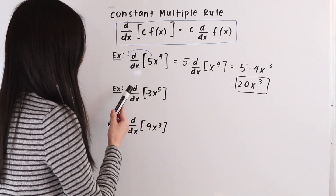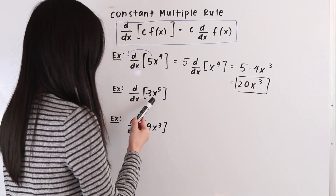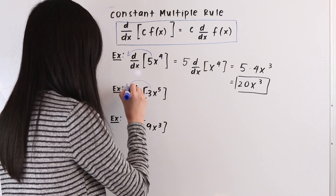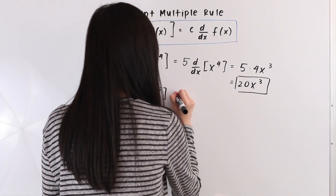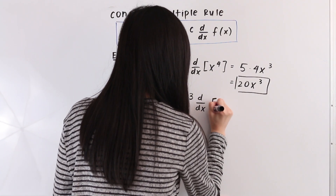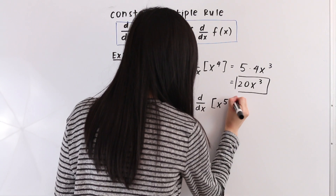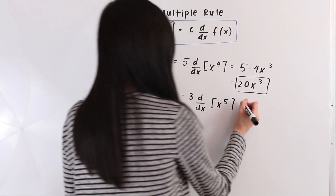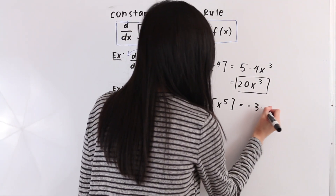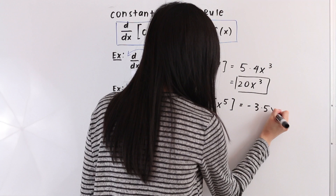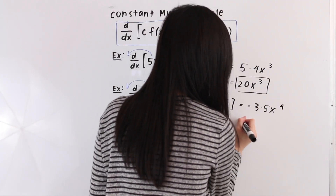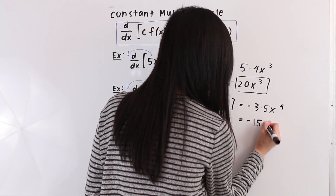In this next example we have the derivative with respect to x of negative 3x to the fifth power. As our first step, we bring this constant outside of our derivative, giving us negative 3 times the derivative with respect to x of x to the fifth. We use the power rule again — we bring the 5 down, giving us times 5 and an x, then subtract 1 from the exponent. So 5 minus 1 equals 4, and we get negative 15x to the fourth.